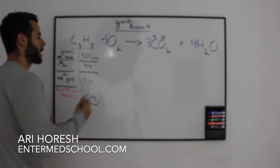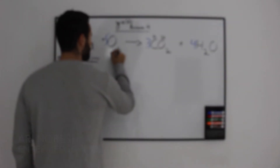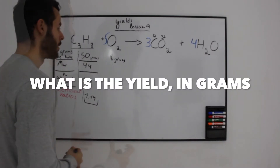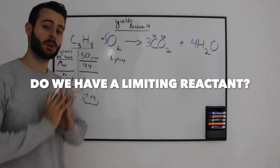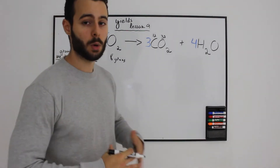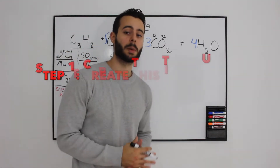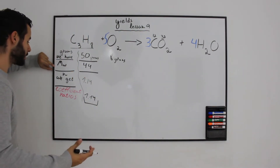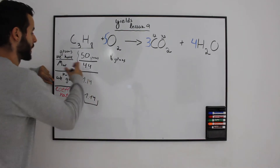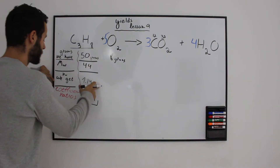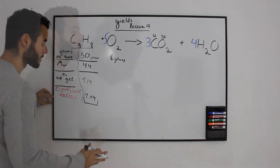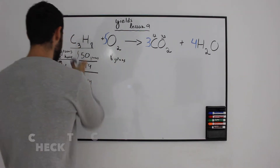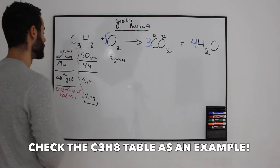50 grams of propane are reacting with 8 grams of oxygen. As we said in the previous video, these questions should be solved by using the following table: grams we actually have, molecular weight, the number of moles converting the grams to actual moles, and the coefficient ratios. We have to take 8 grams of oxygen and fill the entire table. Let's do it.